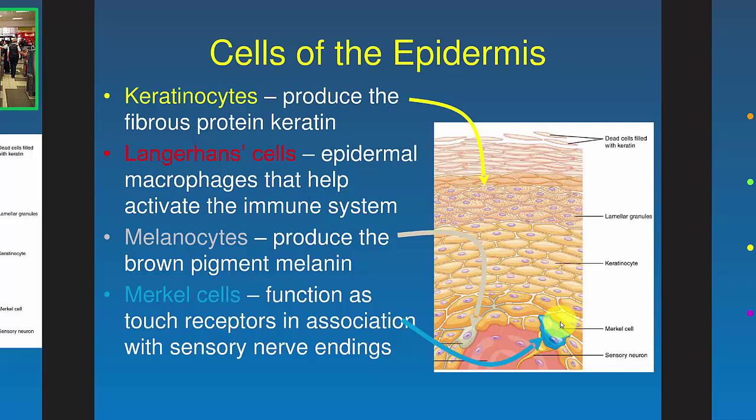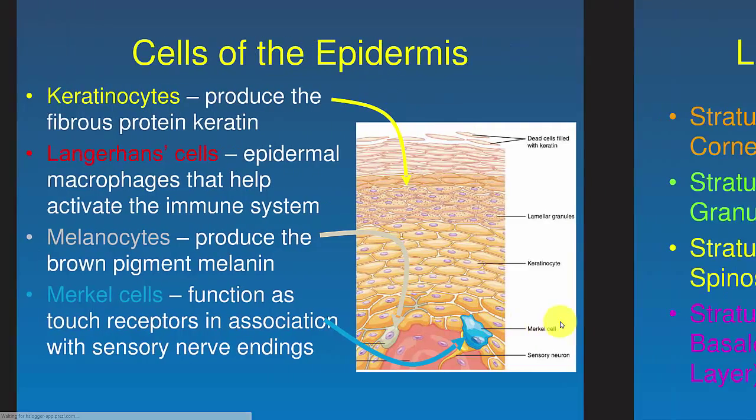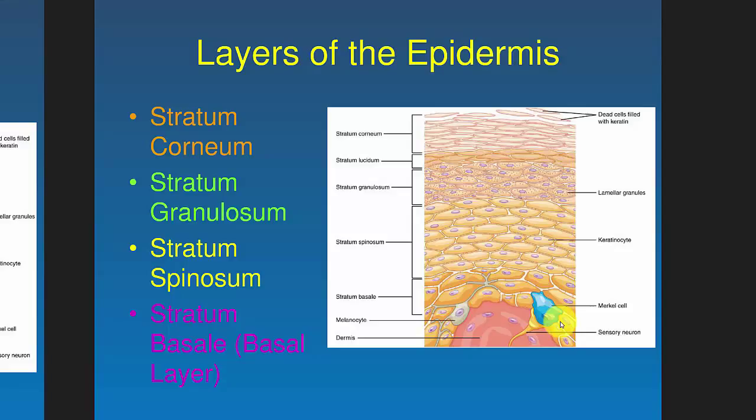Merkel cells are touch cells. Depending on where you look, your skin is a little bit different. In the palm of your hand and the sole of your feet, you actually have five layers of skin, but everywhere else you have four layers.